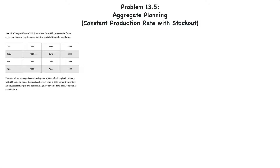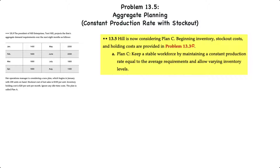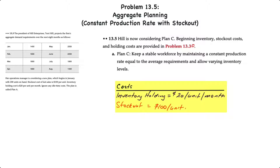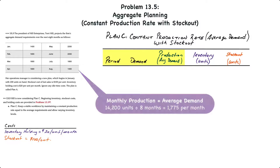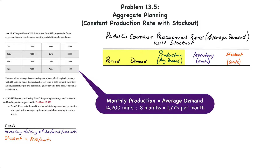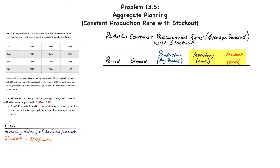Now onto problem 13.5. Hill is now considering Plan C, again using the same information starting from problem 13.3. Plan C keeps a stable workforce by maintaining a constant production rate equal to the average requirements and allows varying inventory levels. That means our costs in this case are only inventory holding costs and stockout costs. The holding cost is still $20 per unit and the stockout cost is $100 per unit. Since there are only two costs, we'll have a total of five columns: the first two being period and demand, the third being production based on the average of all demand over the eight-month period, the fourth showing ending inventory in units, and the fifth in orange showing how many units the company will stock out by.